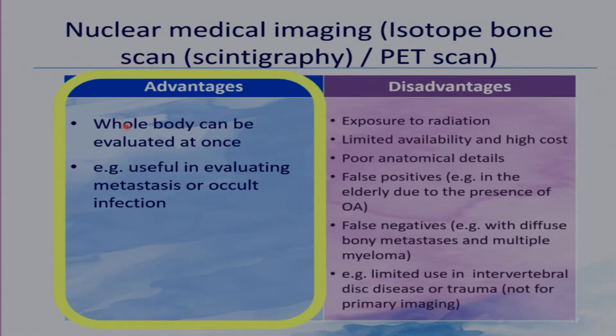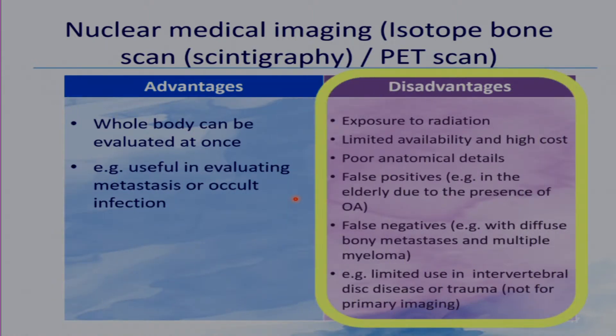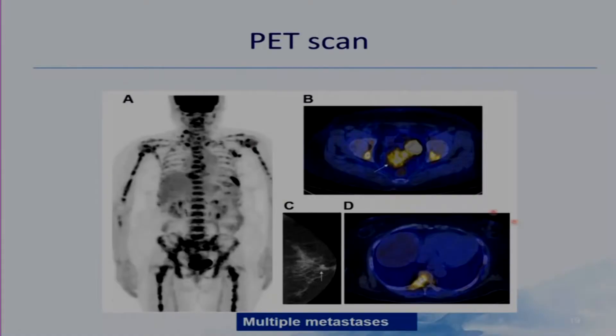Nuclear imaging — that is isotope bone scan and PET scan — the main advantage is that the whole body can be evaluated at once, making it very useful in evaluating metastasis or occult infection. Disadvantages include exposure to radiation, limited availability, high cost, poor anatomical details, false positives in elderly due to OA, and false negatives with diffuse bone metastases and multiple myeloma. Its use in intervertebral disc disease or trauma is very limited and certainly not for primary imaging. This bone scan shows multiple vertebral metastases, and this PET scan shows multiple metastases.